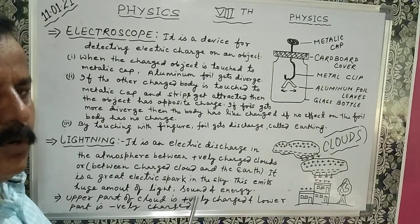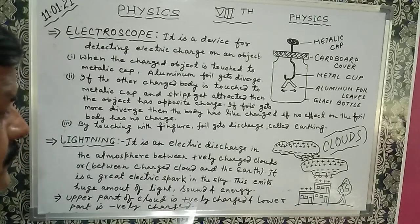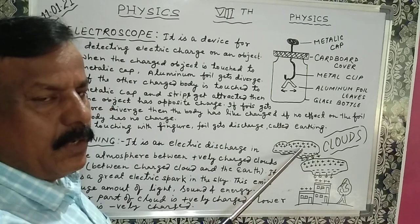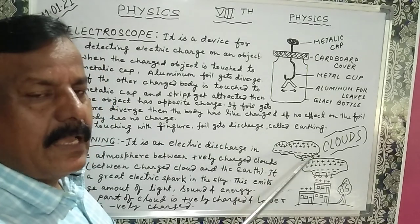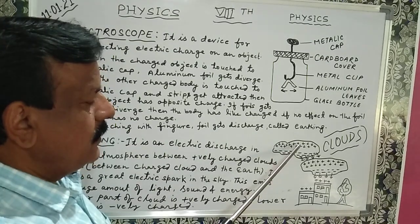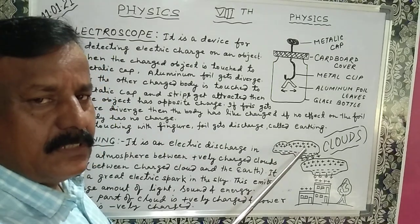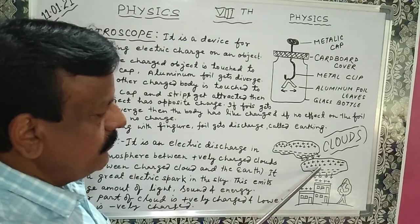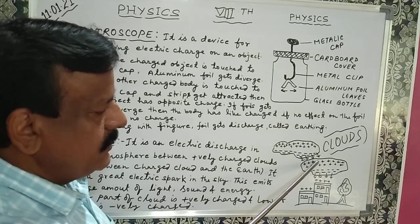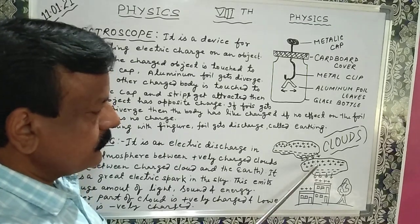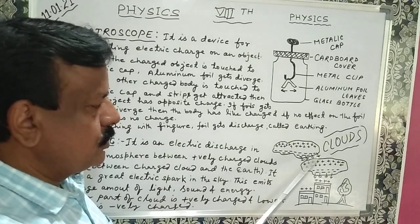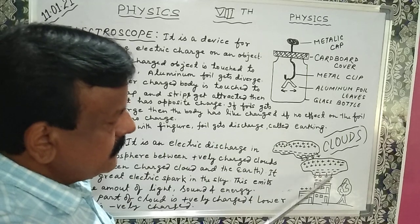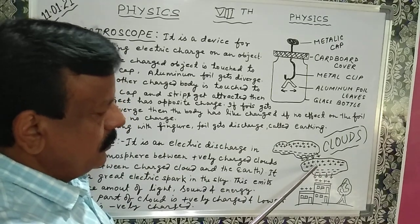So come to here - you can see two clouds we have taken. The cloud has two parts - upper part and lower part. The upper part of the cloud is positively charged and the lower part is negatively charged. Similarly, same cloud upper part positively charged, lower part negatively charged. So when two clouds come close to each other, then negative charge from upper cloud passes to other cloud.